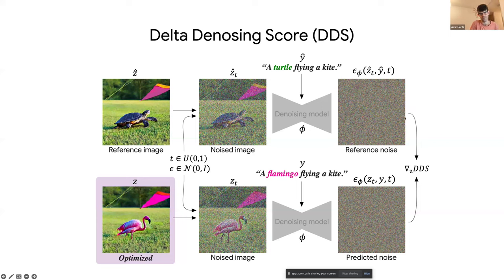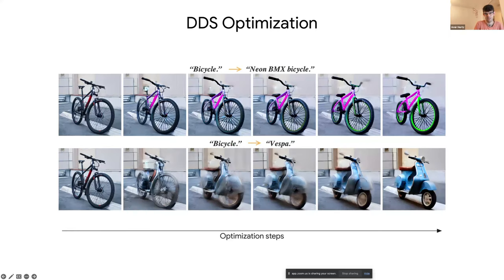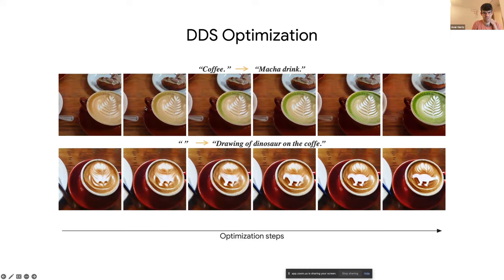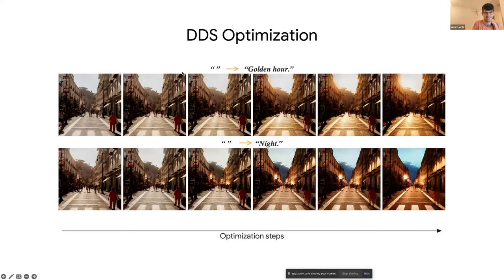Using this score, we can optimize an image directly: given one text describing it and a target text we want to go to, we start from a bicycle and optimize the image until we get a neon BMX or Vespa. We can also change the drawing on a coffee. In all these examples we apply optimization directly on the image pixels.